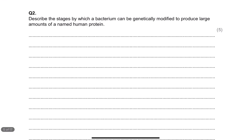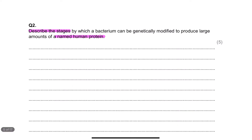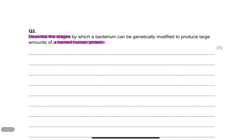The first question: 'Describe the stages by which a bacterium can be genetically modified to produce large amounts of a named human protein.' Before you even think about answering, identify where you get the marks. We need to describe the stages, but critically, you might miss this: 'a named human protein.' This is the basis of the entire answer. So what human protein are we going to use? Insulin.